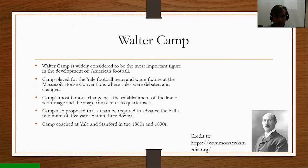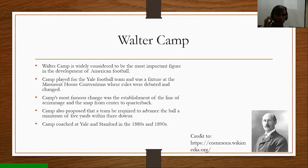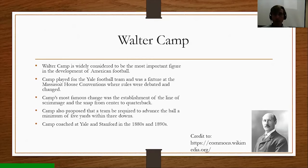Moving on to Walter Camp, a true innovator and great coach who came up with a number of rules we still recognize in the sport today. Walter Camp is widely considered the most important figure in the development of American football. He played for the Yale football team and was a fixture at the Massasoit House Conventions, where rules were debated and changed. Camp's most famous change was the establishment of the line of scrimmage and the snap from center to quarterback. Camp also proposed that a team be required to advance the ball a minimum of five yards within three downs. He went on to coach both Yale University and Stanford University.